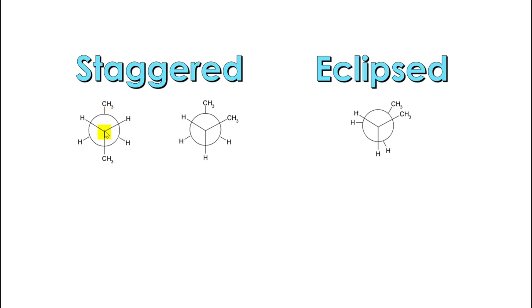This dot here in the middle represents the front carbon, and then this big circle represents the back carbon. Attached to the front carbon, we've got a methyl and then two hydrogens. And attached to the back carbon, we have a methyl and two hydrogens as well. You can see here that this conformation is staggered because we have none of the groups on the front carbon overlapping the groups on the back carbon.